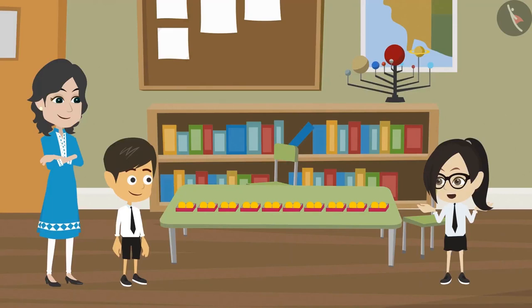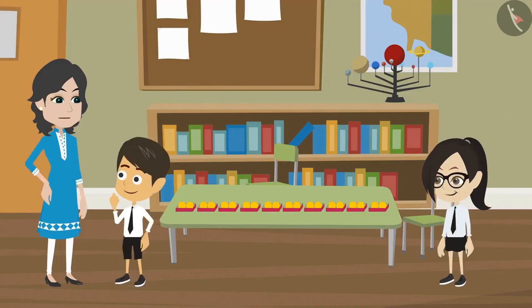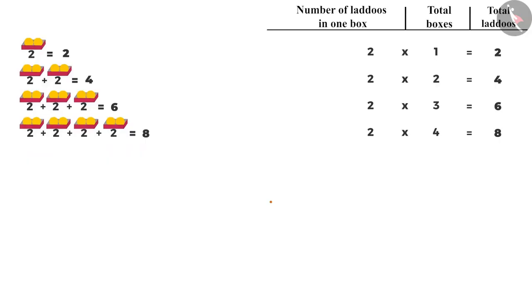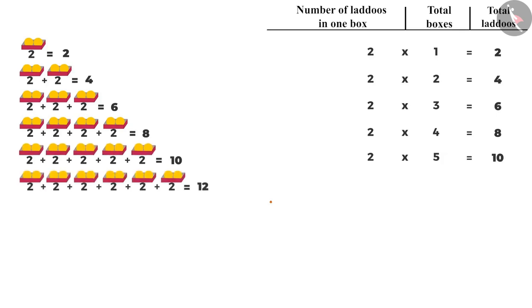That means we don't need to add them. No. For five to ten, you should try to find the result yourself and check. Then to find the ladoos in five boxes, we will multiply two by five. Here, number of ladoos is two and number of boxes is five. Then we can find that there will be ten ladoos in five boxes. Number of ladoos in six boxes will be two multiplied by six, that is twelve.